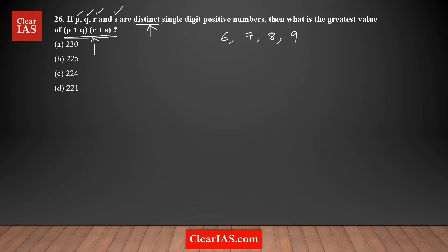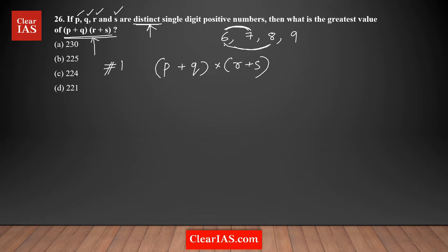There are two approaches we can use. For approach number one, I need to find the maximum value of (p + q) × (r + s) by trying different combinations. p and q could be 6 and 7, or 6 and 8, or 6 and 9 — so there are three total pairs possible. Let me list out the different possibilities and find which pair gives the maximum product.